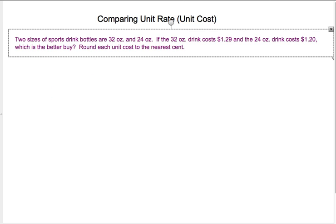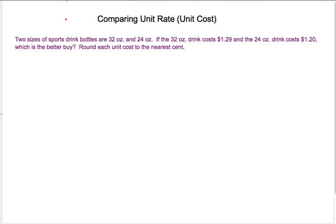Let's try comparing unit rates. So if we had two sizes of sports drink bottles that are 32 ounces and 24 ounces, and if the 32-ounce drink costs $1.29 and the 24-ounce drink costs $1.20, which is the better buy?